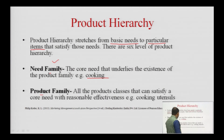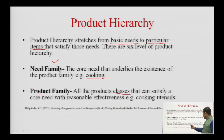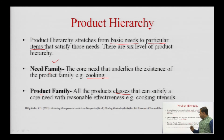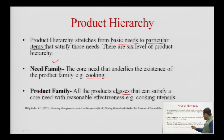The next level is the product family — all the product classes that can satisfy the core need with reasonable effectiveness. For example, cooking utensils broadly satisfy the cooking need. I have started narrowing down; within the market I will be needing certain utensils for my kitchen, specifically cooking utensils.